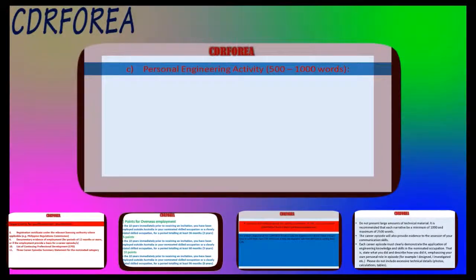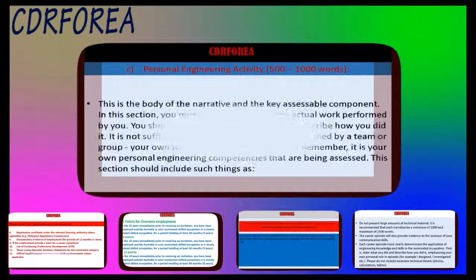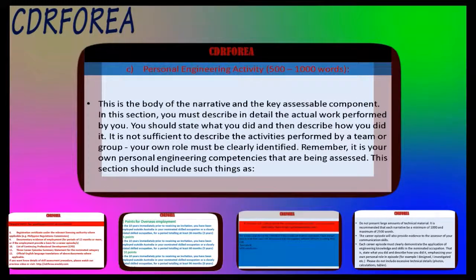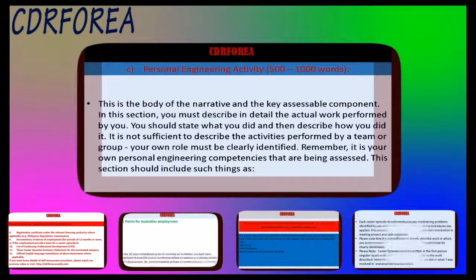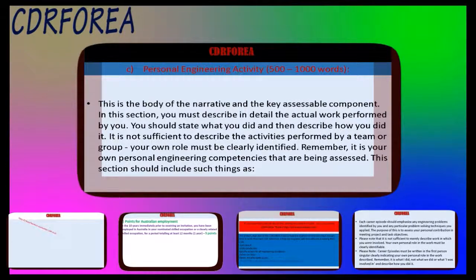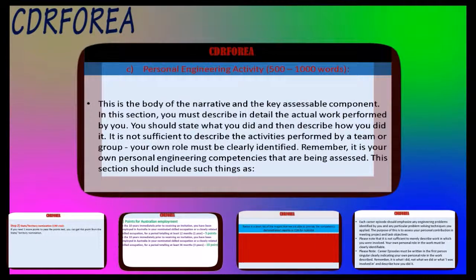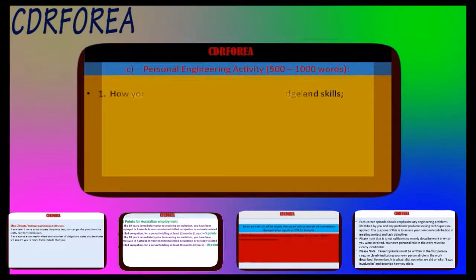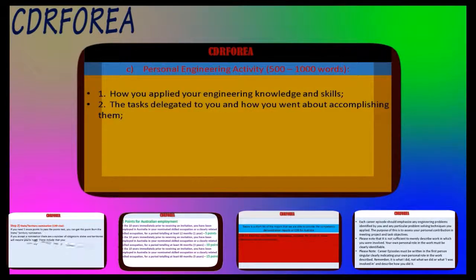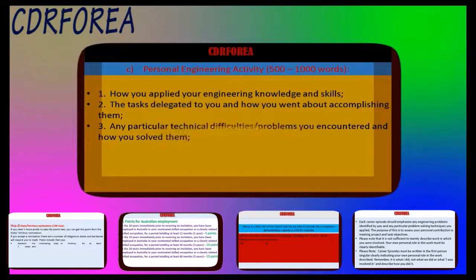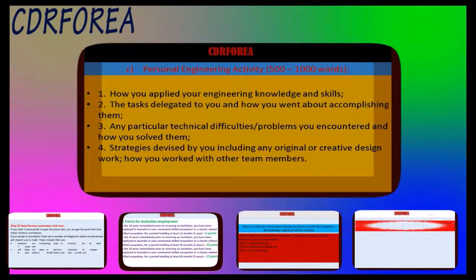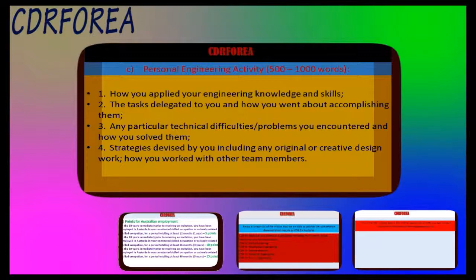C. Personal Engineering Activity — 500 to 1000 words. This is the body of the narrative and the key assessable component. In this section, you must describe in detail the actual work performed by you — what you did and how you did it. It is not sufficient to describe activities performed by a team; your own role must be clearly identified. Remember, it is your own personal engineering competencies that are being assessed. This section should include: 1. How you applied your engineering knowledge and skills. 2. The tasks delegated to you and how you accomplished them. 3. Any technical difficulties/problems you encountered and how you solved them. 4. Strategies devised by you, including any original or creative design work, and how you worked with other team members.